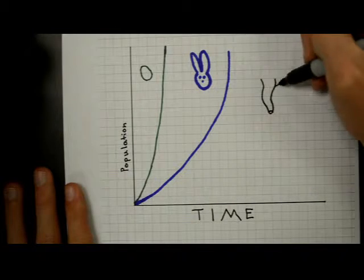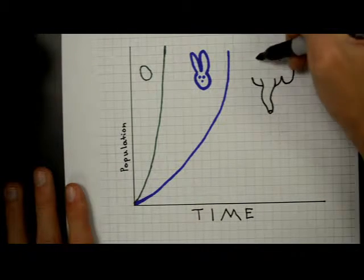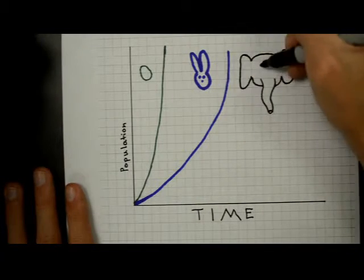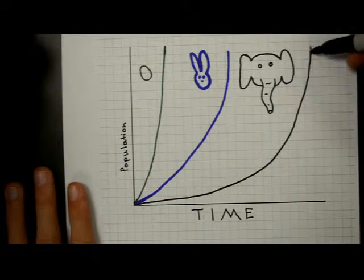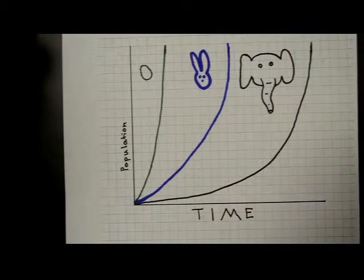This is what is commonly referred to as a J-shaped curve. Again, this pattern is true for all populations. Even for something like elephants, the rate may be slower, but given enough time, all populations go nearly vertical.